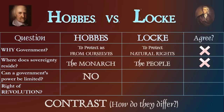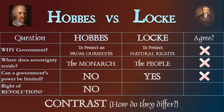Can a government's power be limited? Hobbes says no; Locke says yes. This makes Hobbes an absolutist and Locke a constitutionalist. When government is not doing what it's supposed to do, do we have a right to overthrow it? Hobbes, who says sovereignty resides in the monarch, says no — there is no revolutionary right. Whereas John Locke says that if there is a long train of abuses and usurpations, if government is not doing as good a job protecting our natural rights as we could do ourselves, then yes, we do have a revolutionary right.